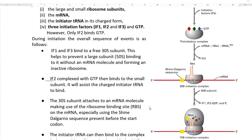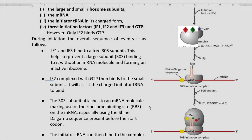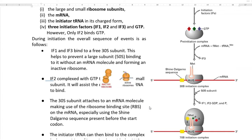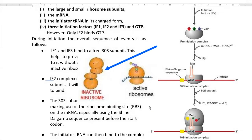Looking at the overall sequence of steps in the initiation process: first, initiation factor 1 and initiation factor 3 bind to the free 30S subunit. The main role of this binding is to prevent the large 50S subunit from binding without an mRNA molecule present. Without mRNA, the 30S and 50S would join together to form an inactive ribosome, which would not be able to continue the translation process.